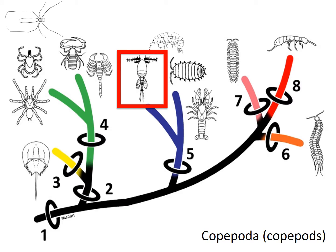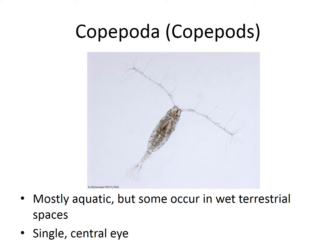The first group of crustaceans we'll talk about are the copepods, or Copepoda. Copepods are primarily aquatic creatures, though some occur in moist terrestrial spaces. They're defined by retaining that single naupliar eye into adulthood and don't change morphologically very much from larvae. They are considered one of the more primitive groups of crustaceans because of this. For a popular culture reference — if you're familiar with SpongeBob SquarePants, Plankton is actually a copepod.